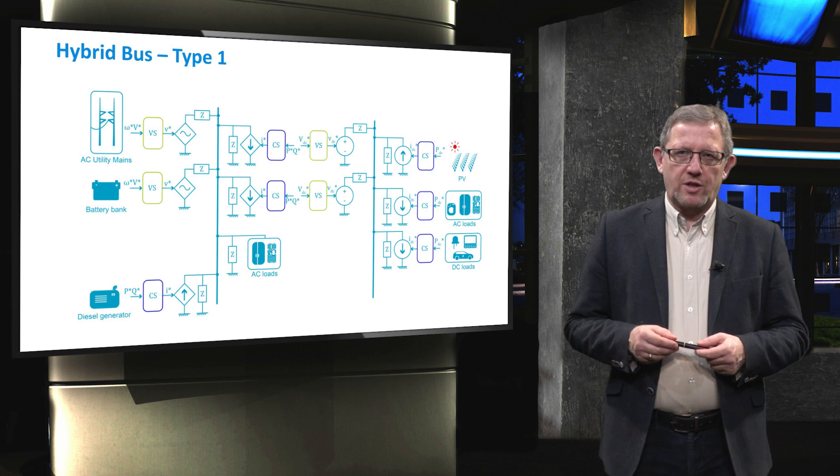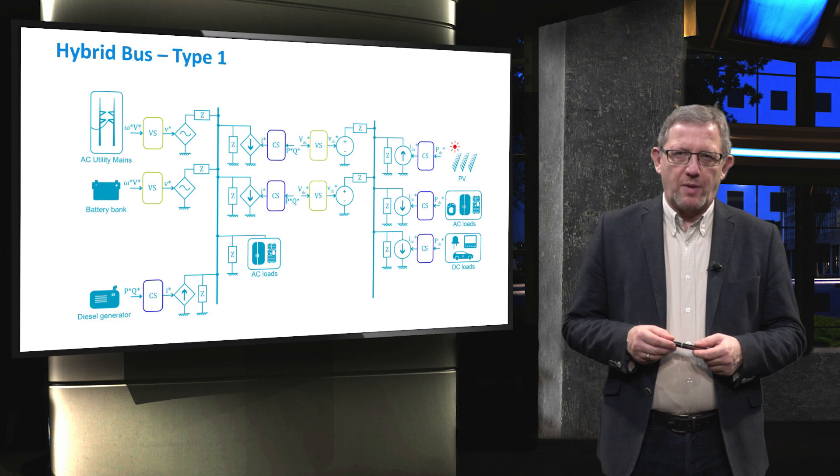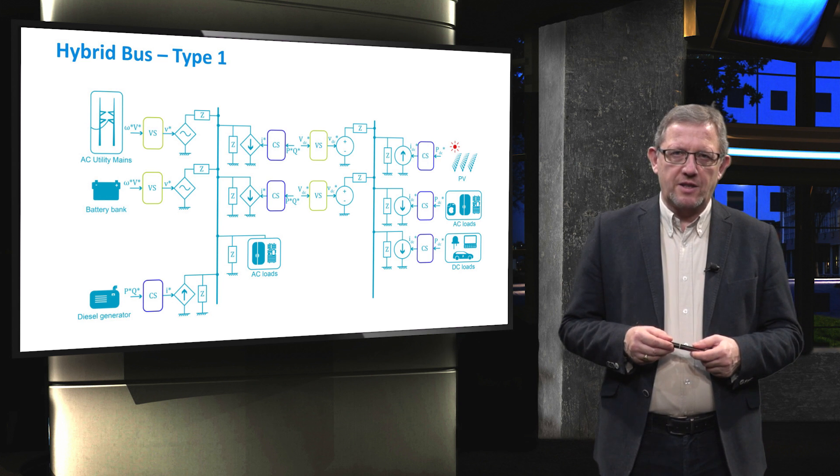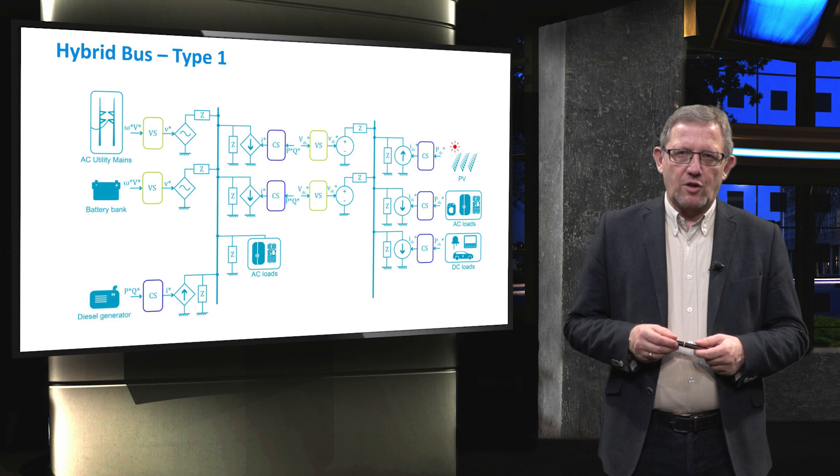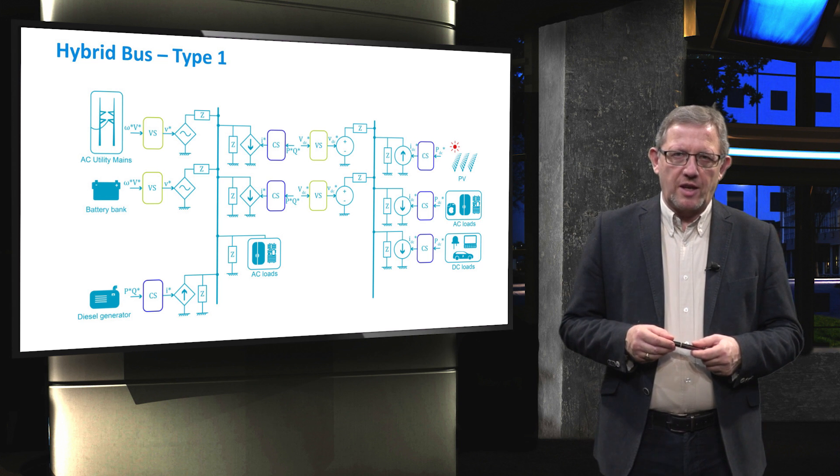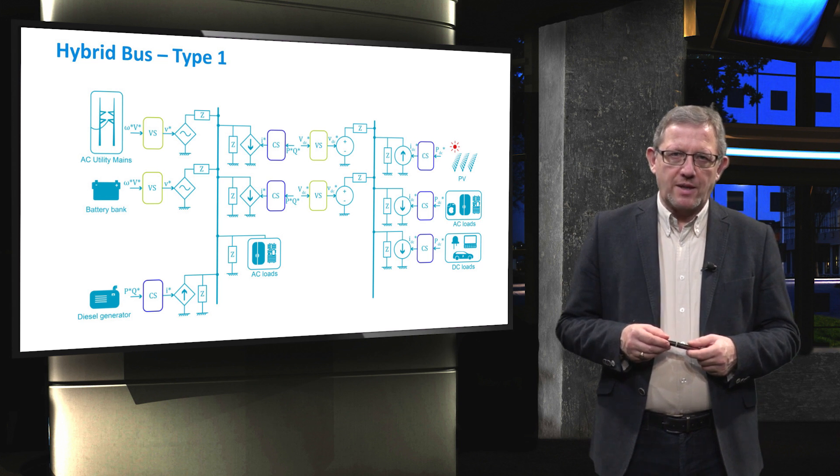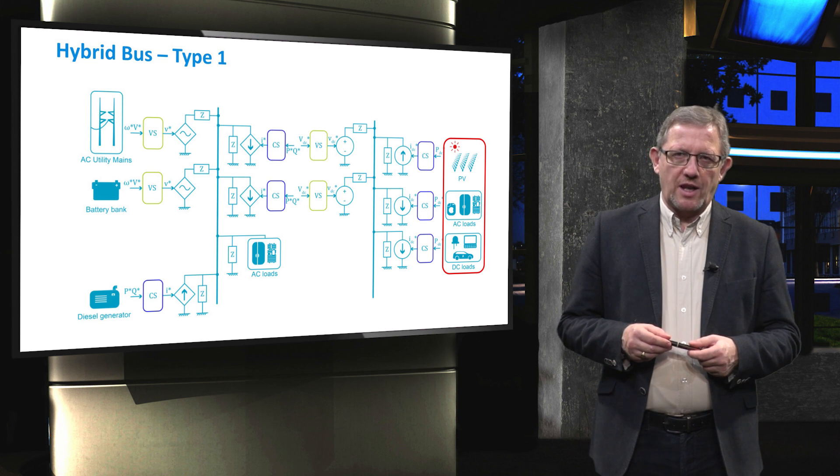The figure shows the representation of components based on the grid forming or grid feeding schemes. As it is shown, the voltage of DC bus can be solely controlled by the AC bus as the photovoltaic unit, AC loads and DC loads themselves have limitations to maintain the DC link voltage.